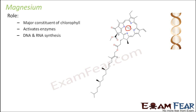Magnesium also helps in RNA and DNA synthesis. RNA and DNA contain genetic information, and in plants the genetic traits are carried from parents to offspring through DNA and RNA. So the formation of DNA and RNA is very important, and magnesium plays a role in their synthesis. It also plays an important structural role in the membranes of the cell and its organelles, since in eukaryotes each organelle has a separate membrane.